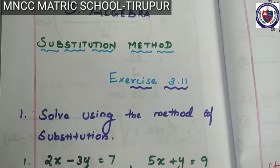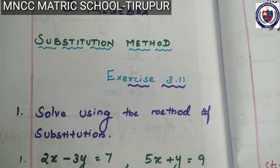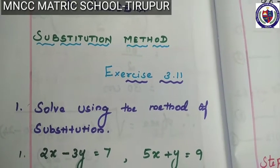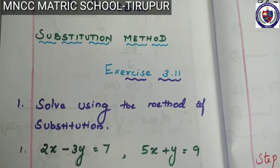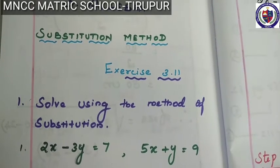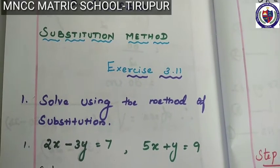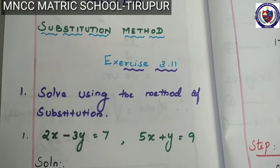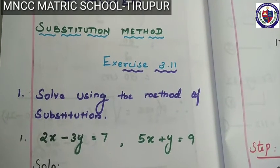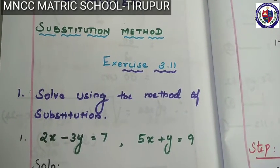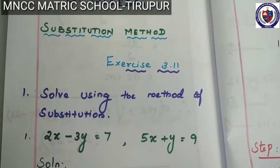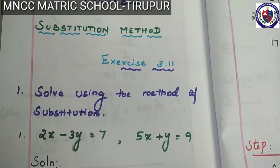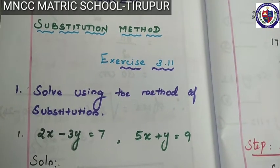Hi students, this is third unit algebra - substitution method. What is the meaning by substitution method? In this method, we substitute the value of one variable by expressing it in terms of the other variable, to reduce the given equation of two variables into an equation of one variable. Since we are substituting the value of one variable in terms of the other variable, this method is called the substitution method.